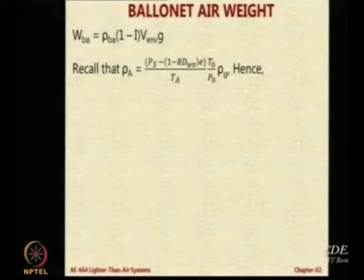So rho_Ba is density of the ballonet air, (1-i) into V_env, V_env is the volume available for the ballonet because V_env is the total volume and (1-i)V_env is the volume occupied by the ballonet at any instance, and g is the classical acceleration due to gravity which takes care of the units in this case. Also recall that density of the ambient air rho_A can be assumed to be the static pressure minus the component or the loss because of the humidity, that is (P_s - (1-RdWv)e) / T_A times T_0 rho_0 / P_0. Incidentally, using simple expression PV = RT, you can work out or P = rho RT, so rho will be equal to P by T. You can get the expression for R from that and that is how we got this. If you recall we got this T_0 rho_0 by P_0 using the standard gas equation.